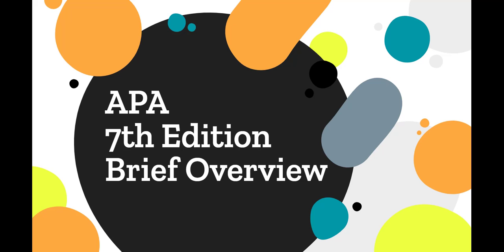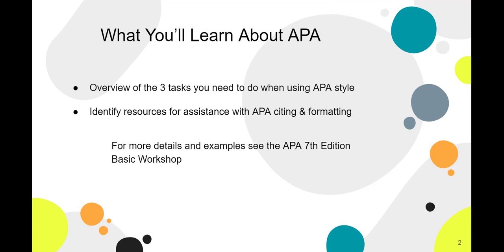Welcome to the APA 7th edition brief overview. APA 7th edition was released in October 2019. In this workshop, you will get a brief overview of the tasks you need to do when creating an APA style project and some resources to help you with this. For more details, more explanation of rules, and more resources, see the APA 7th edition basics workshop.